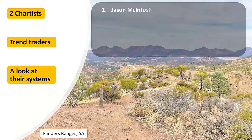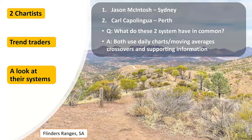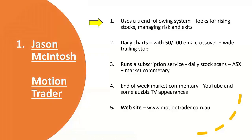The two chartists are Jason McIntosh from Sydney and Carl Capolingua from Perth. What do these two systems have in common? They both use daily charts, moving averages, crossovers, and a few other supporting indicators. First, we'll look at Jason McIntosh. Both of these are trend-following systems. He's looking for rising stocks and managing risk and exit. His main criteria: he uses daily charts with a 50-100 EMA crossover and a wide trailing stop. He also runs a subscription service and market commentary, does end-of-week commentary on YouTube, and appears on Ausbiz from time to time. His website is motiontrader.com.au.